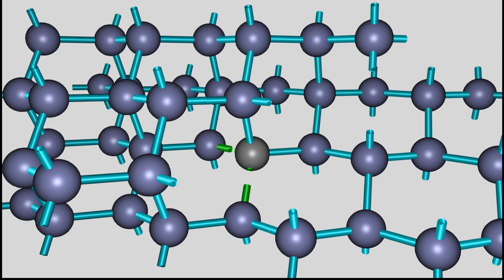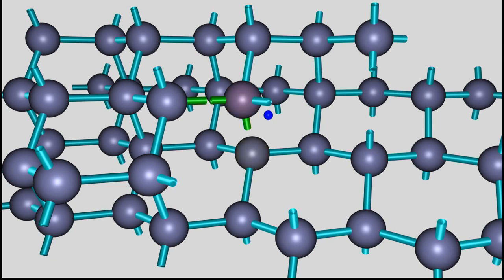Energy is needed to crack the bond between two silicon atoms and to separate the electron from one of the silicon atoms. There is a gain of energy while the electron is entering the impurity atom and while one more covalent bond is formed between that atom and the fourth silicon atom.